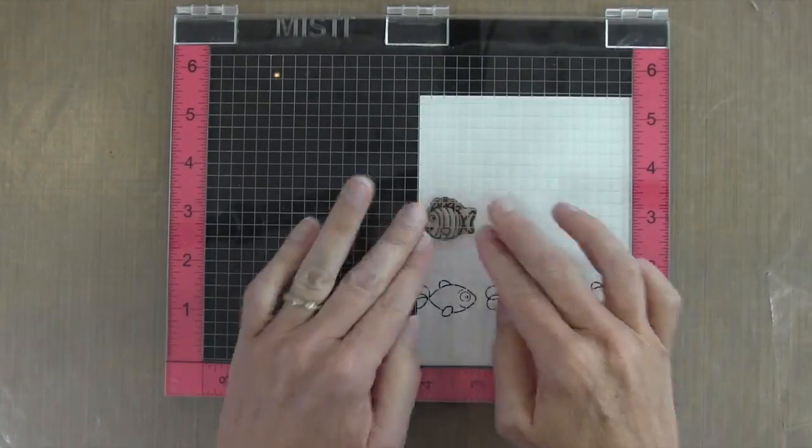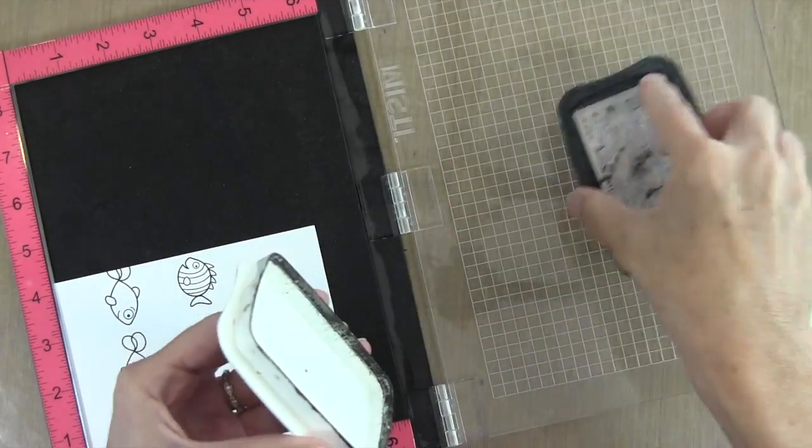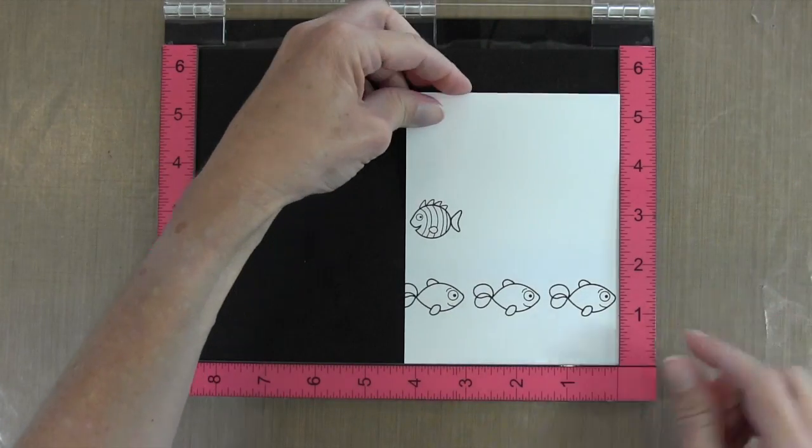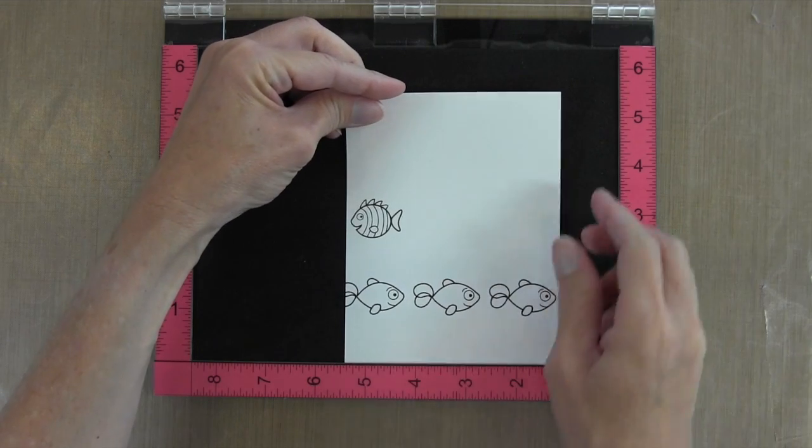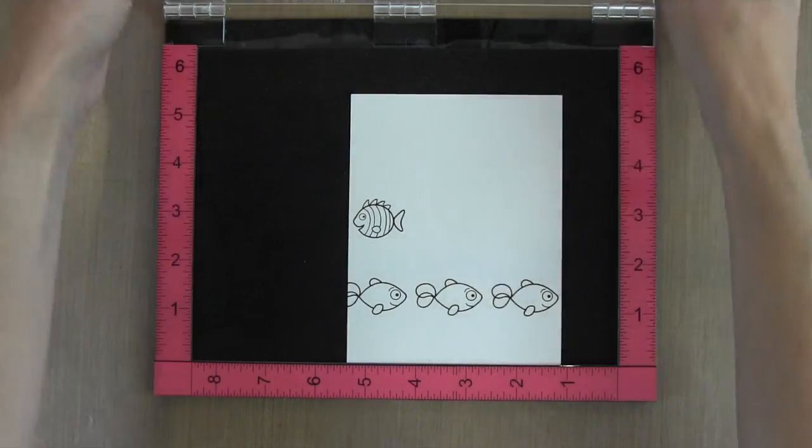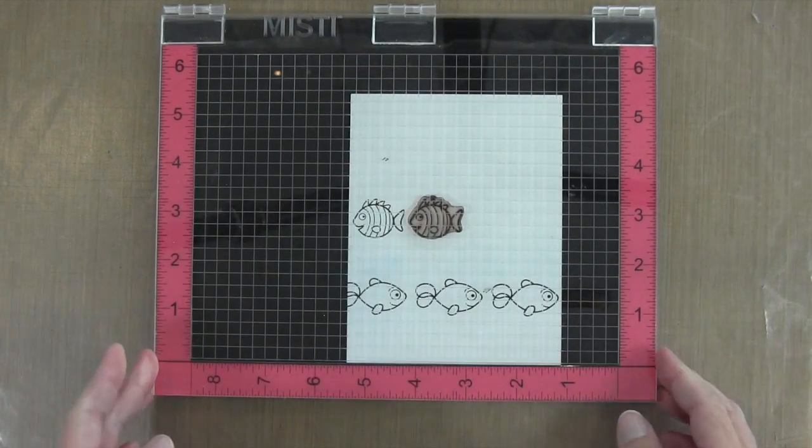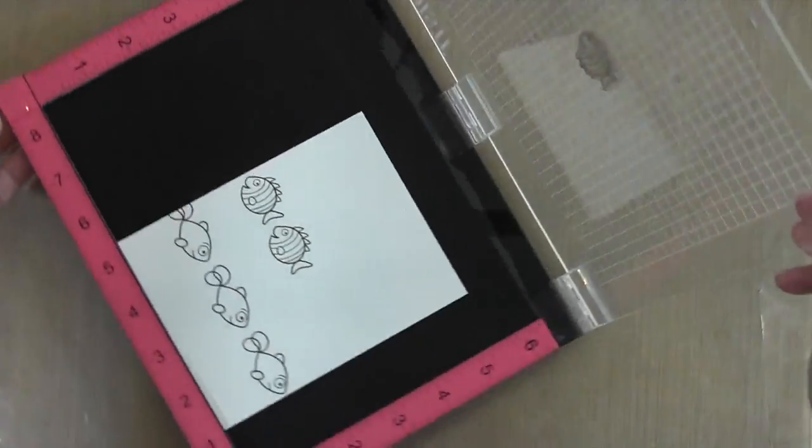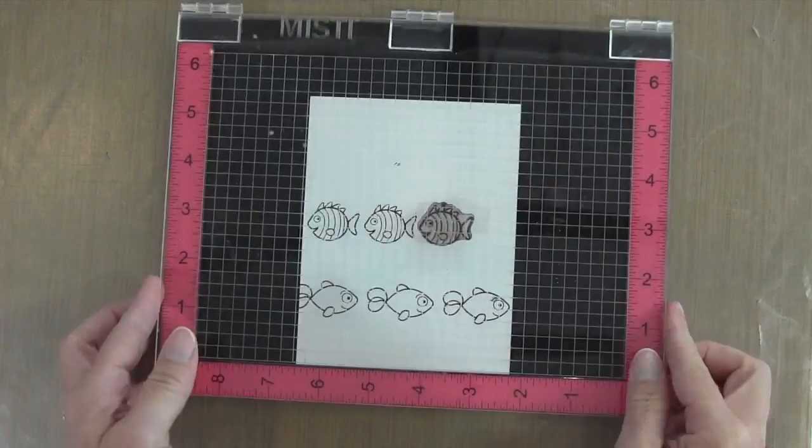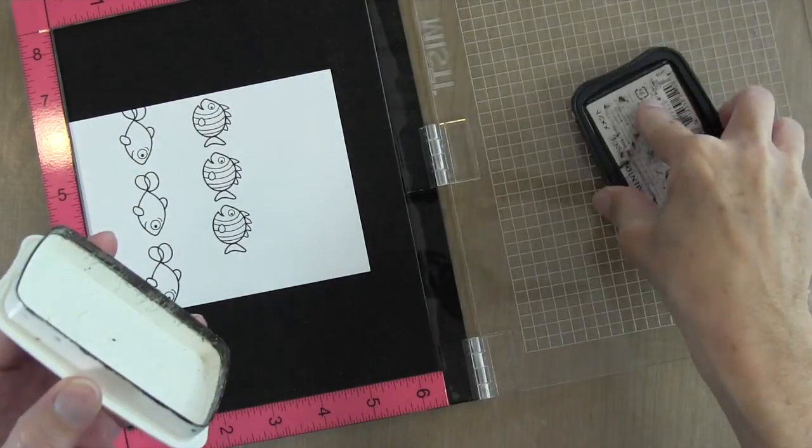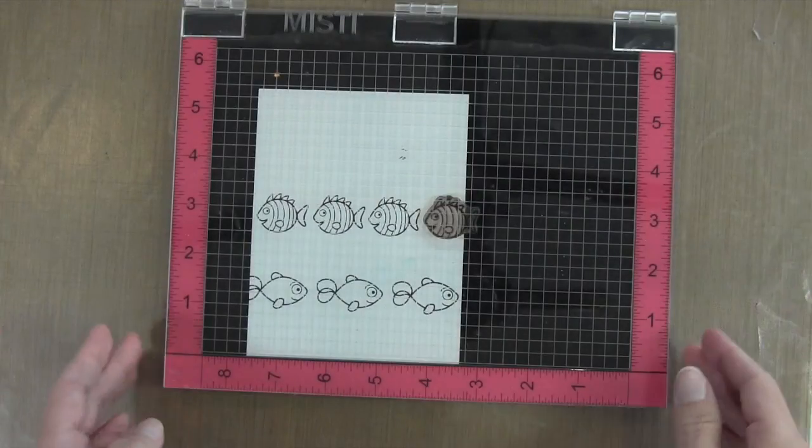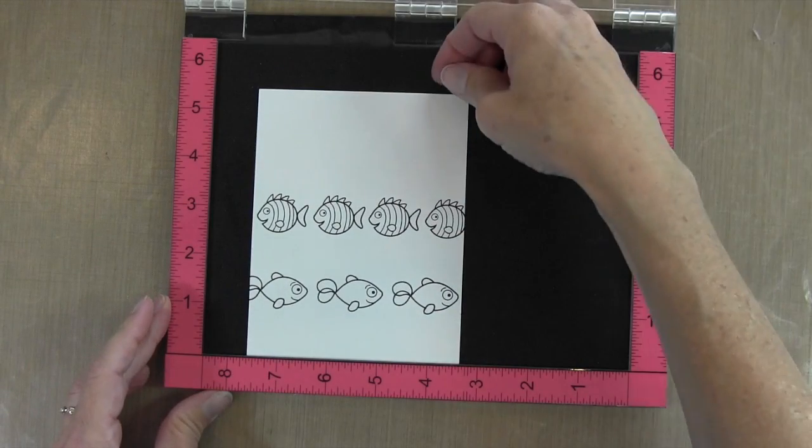For this guy I determined that an inch and an eighth was the way to go for this size fish. I'm going to move my cardstock an inch and an eighth according to the ruler on the bottom. The MISTI is great because it has rulers on three different sides. I'm going to stamp him down and then repeat this two more times to get an inch and an eighth down, stamp, and then one more time an inch and an eighth to the left, then stamp down.